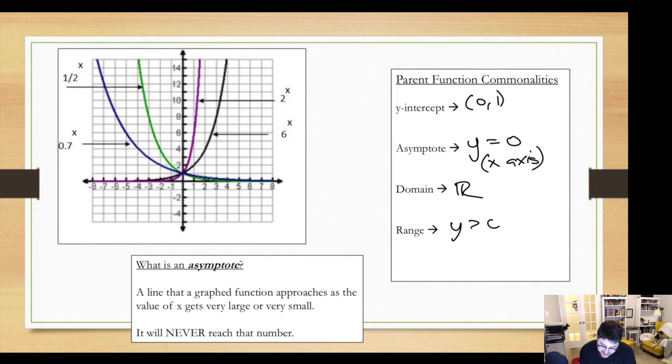As far as our range, all these graphs are above that asymptote. So they are always going to be above zero. So the range we could write as y is greater than zero, not equal to, because we never equal that number. Or we could say it's from zero to infinity. And we put parentheses because we don't equal those numbers. We get close. We don't equal.